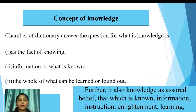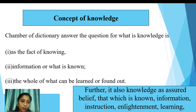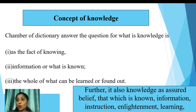The Chambers Dictionary defines knowledge as the fact of knowing, information of what is known, or the whole of what can be learned or found out. It is further defined as assured belief — that which is known: information, instruction, learning, enlightenment, practical skill, and acquaintance.